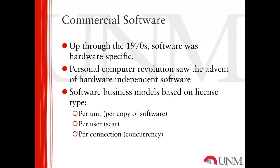Software business models developed out of this portable software model to include specific types of software licenses sold to customers. These include per-unit or per-copy software purchase, per-user or seat-based software licensing, and per-connection or concurrency type of licensing. The three different types of purchase models depended on the type of software you were buying. If you were buying a desktop copy of Lotus 1-2-3, that's typically a per-unit or per-copy licensing model. But if you were buying a networkable, time-shareable piece of software, those were often licensed on the number of users or how many connections would be active at once.